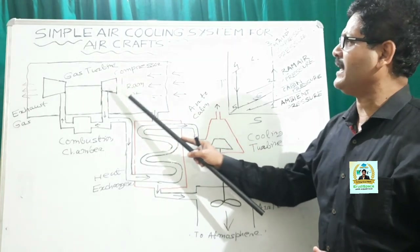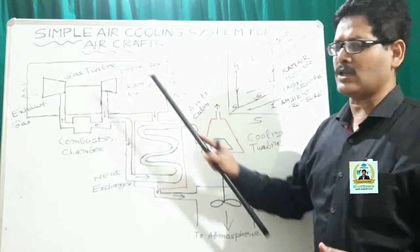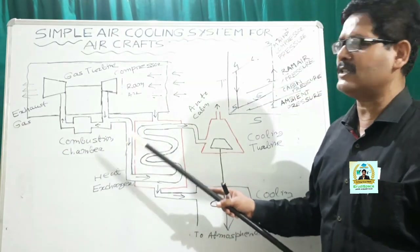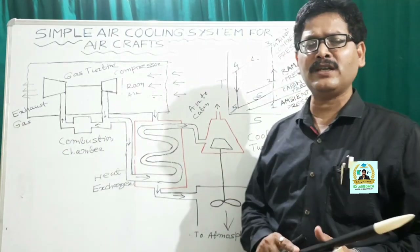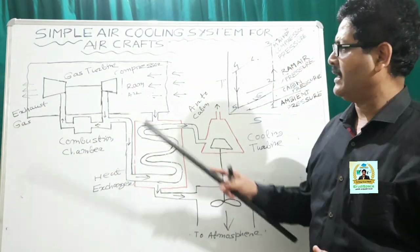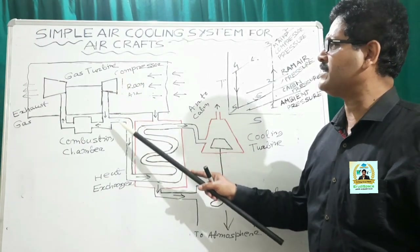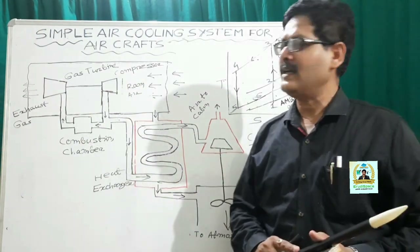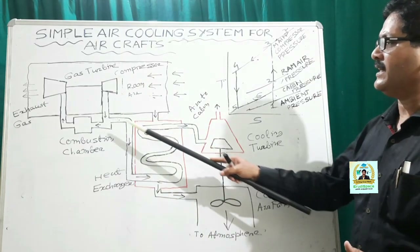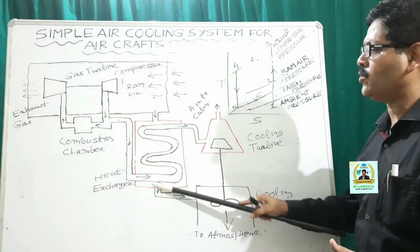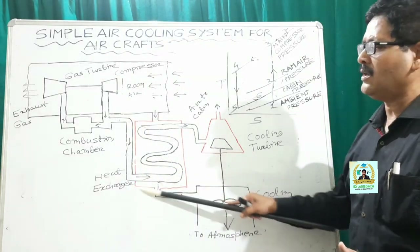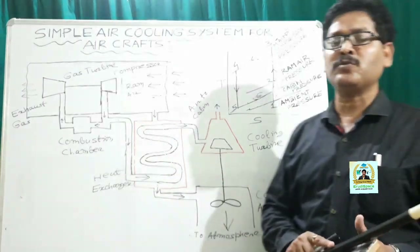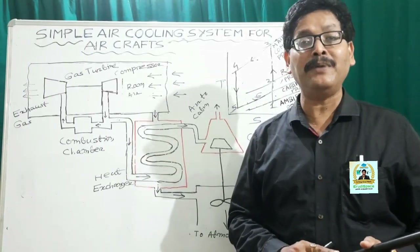Then that ram air is taken to the compressor where it is compressed, and due to compression its pressure and temperature are significantly raised. After that, the compressed air is taken to the gas turbine, and part of the compressed air is made to flow through the heat exchanger. This part of air is what we call blade air.